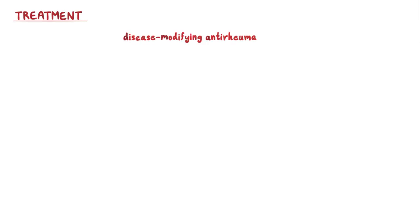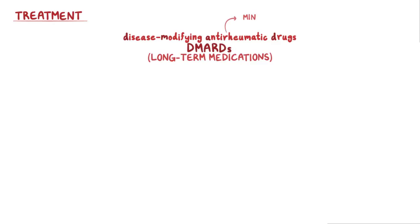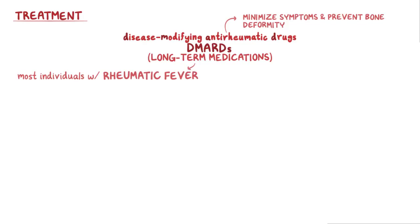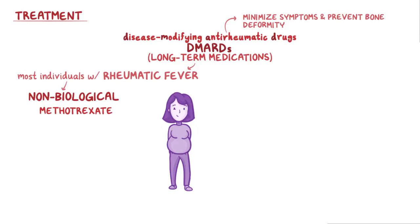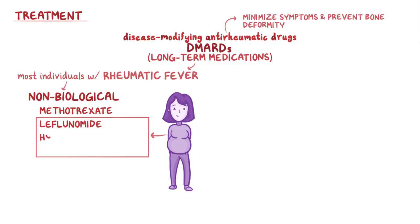There's no cure for rheumatoid arthritis, but medications called disease-modifying anti-rheumatic drugs, or DMARDs, which are long-term medications, can minimize symptoms and prevent bone deformity. Most individuals with rheumatoid arthritis are started on non-biological DMARDs like methotrexate. But some individuals, like pregnant women, can't take methotrexate, so they should get another non-biological DMARD like leflunomide, hydroxychloroquine, or sulfasalazine.